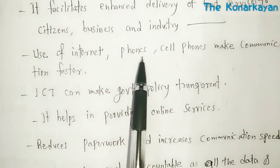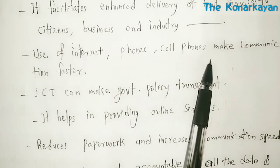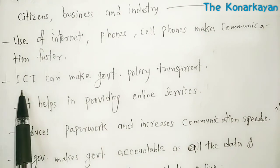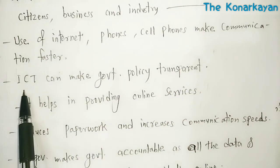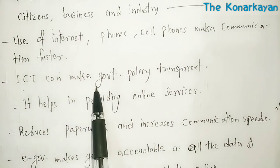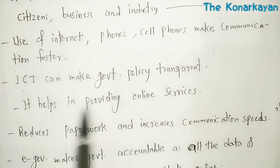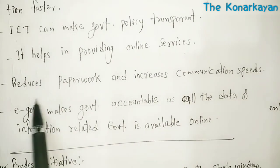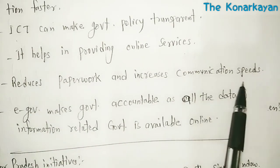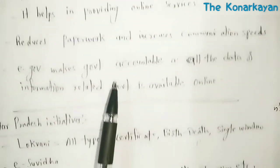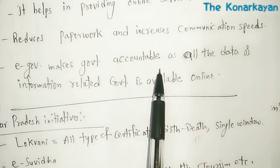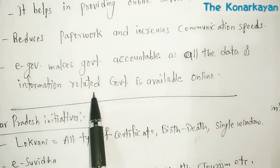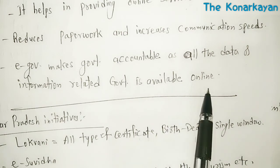Use of internet, phones, and cell phones makes communication faster. ICT — information and communication technology — can make government policy transparent. It helps in providing online services, reducing paperwork, and increasing communication speeds. E-governance makes the government accountable as all data and information related to government is available online.